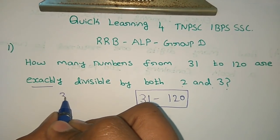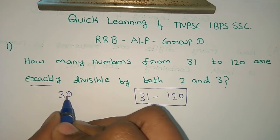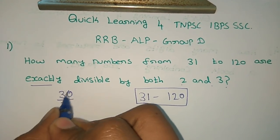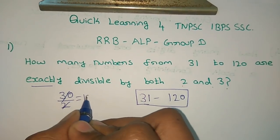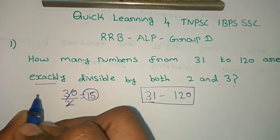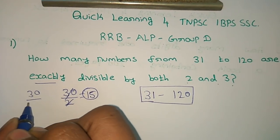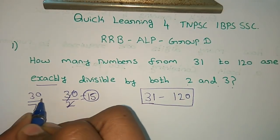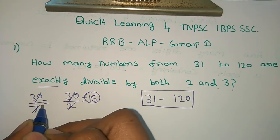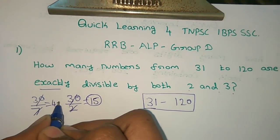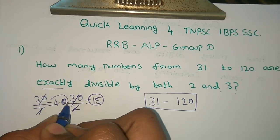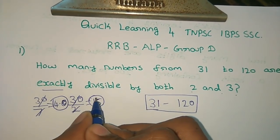Now, the number that is divisible by both 2 and 3 must be divisible by their LCM, which is 6. So the value that is exactly divisible will be multiples of 6.